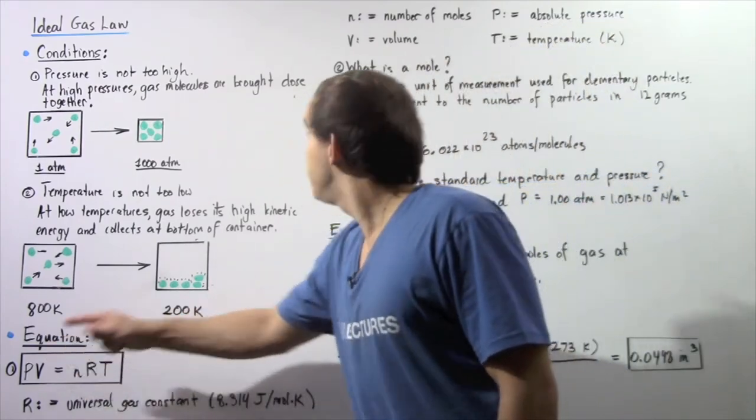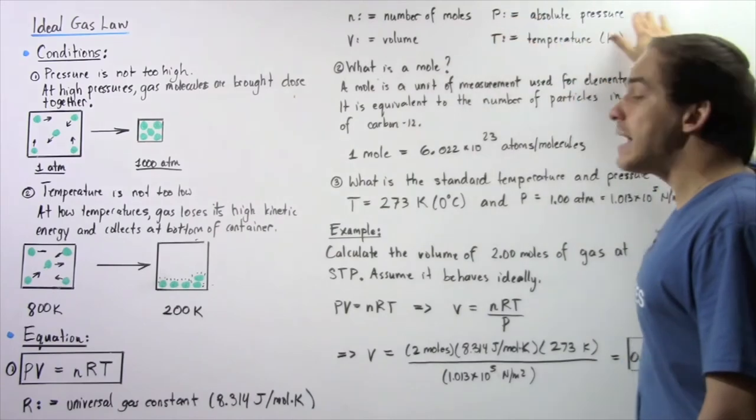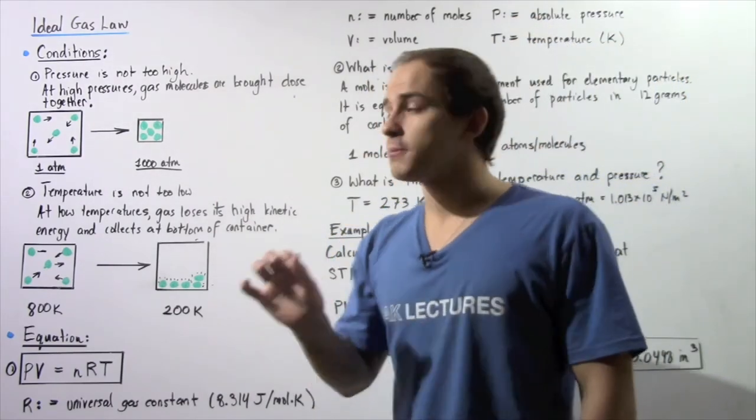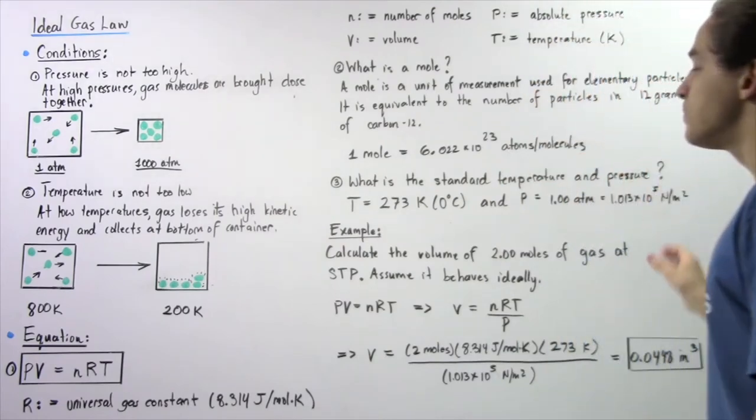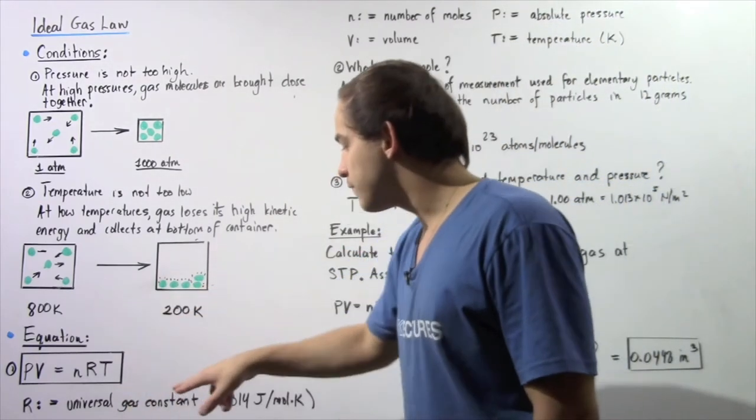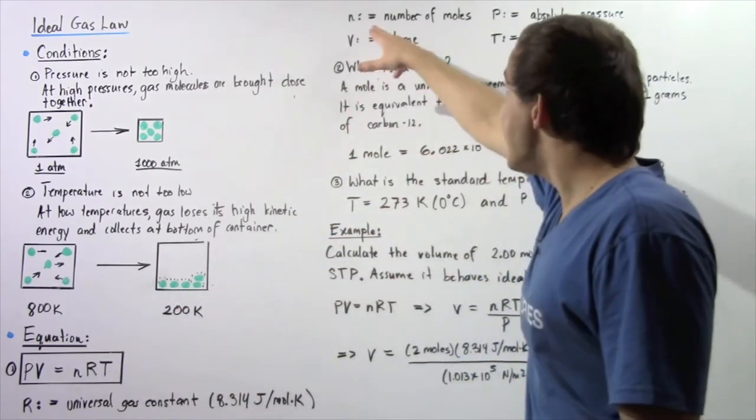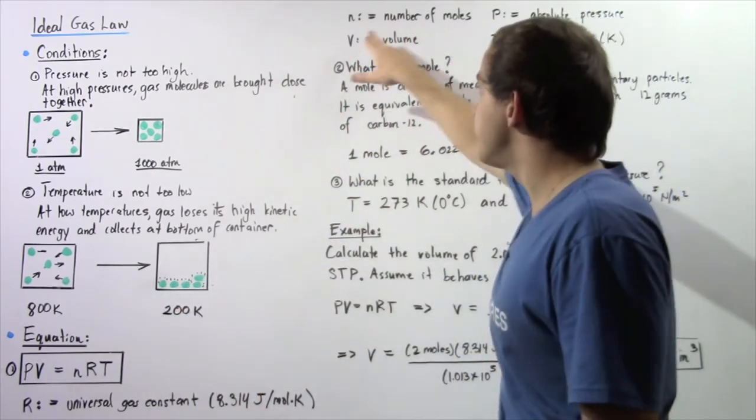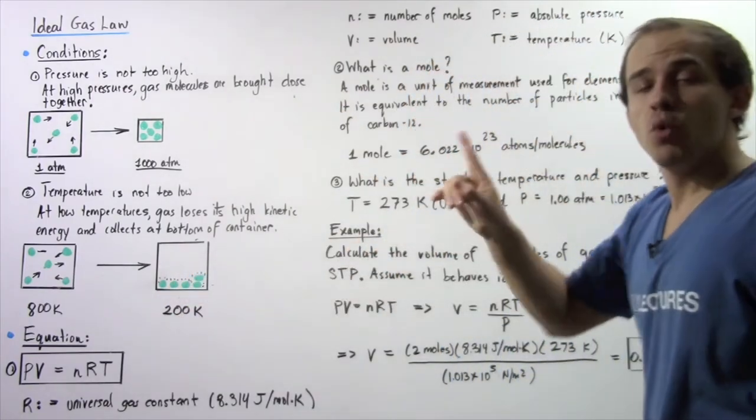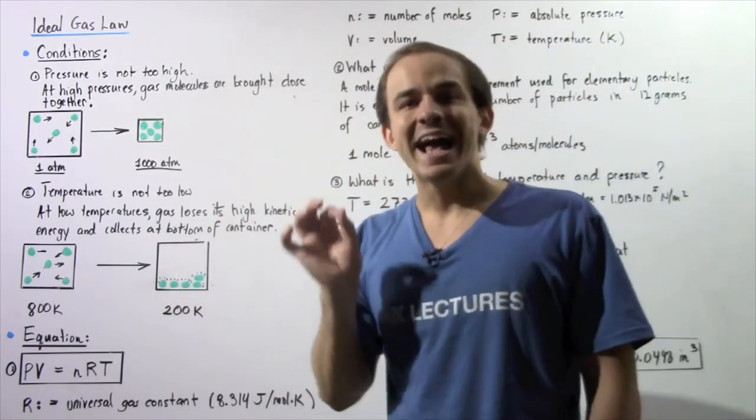Once again, the P is simply our absolute pressure. P is not the gauge pressure. P is the absolute pressure within our gaseous system. R is our universal gas constant. N is our number of moles. V is our volume. And T is our temperature, which is always given in Kelvins.